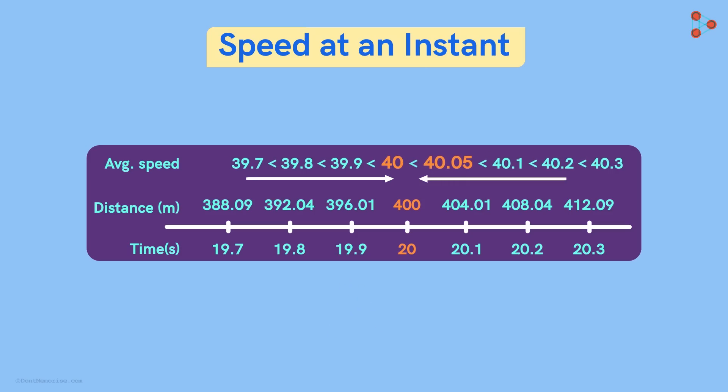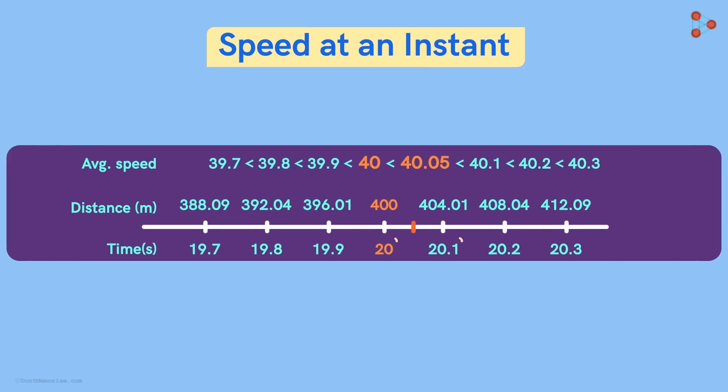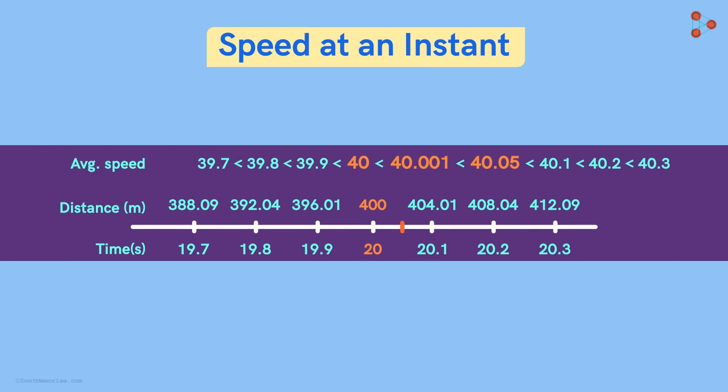We can find the average speeds at even closer time intervals. Let's say we get the average speed between these points as 40.001. So 40.05 cannot be the answer.